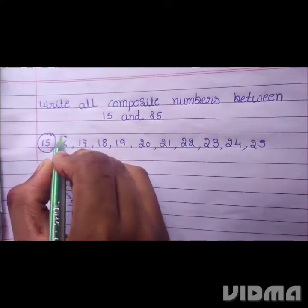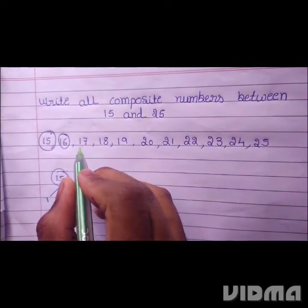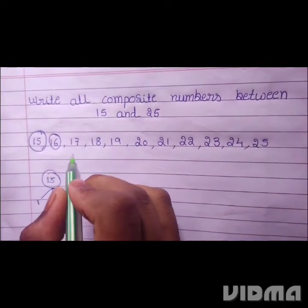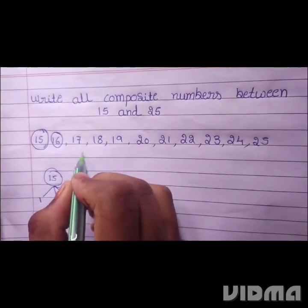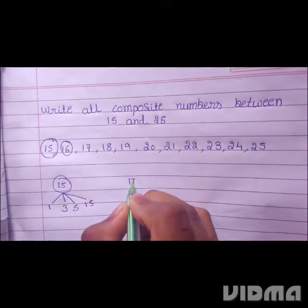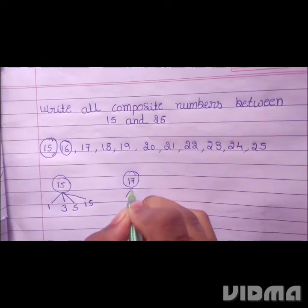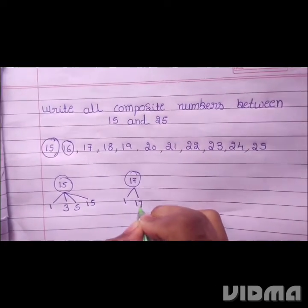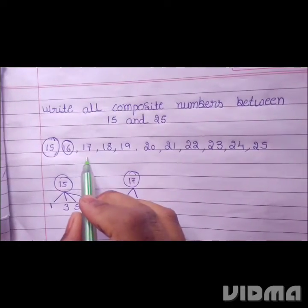16 is also a composite number. 17 is not a composite number because it has only two factors — it comes in the one table and itself 17 table. So 17 is a prime number.